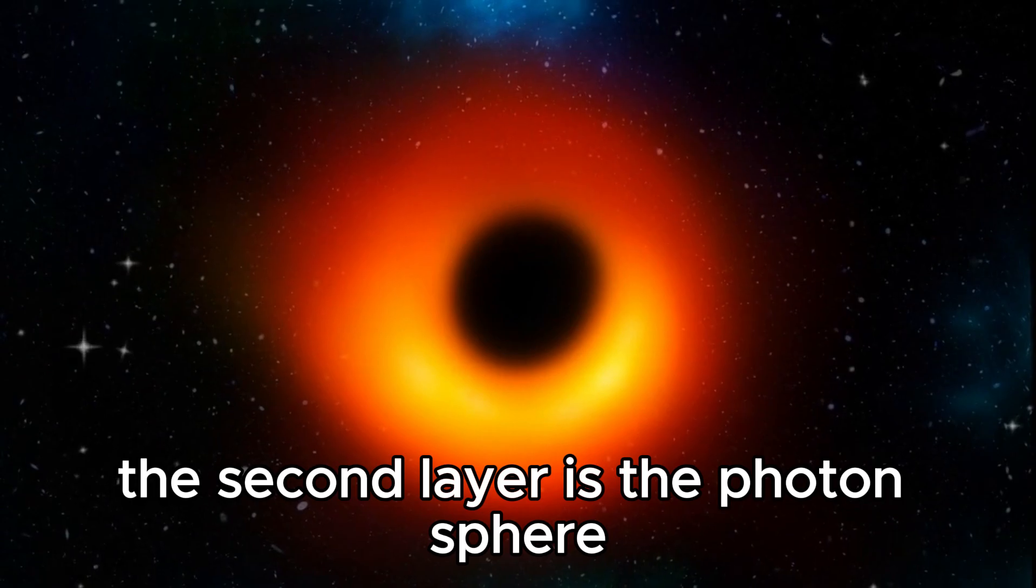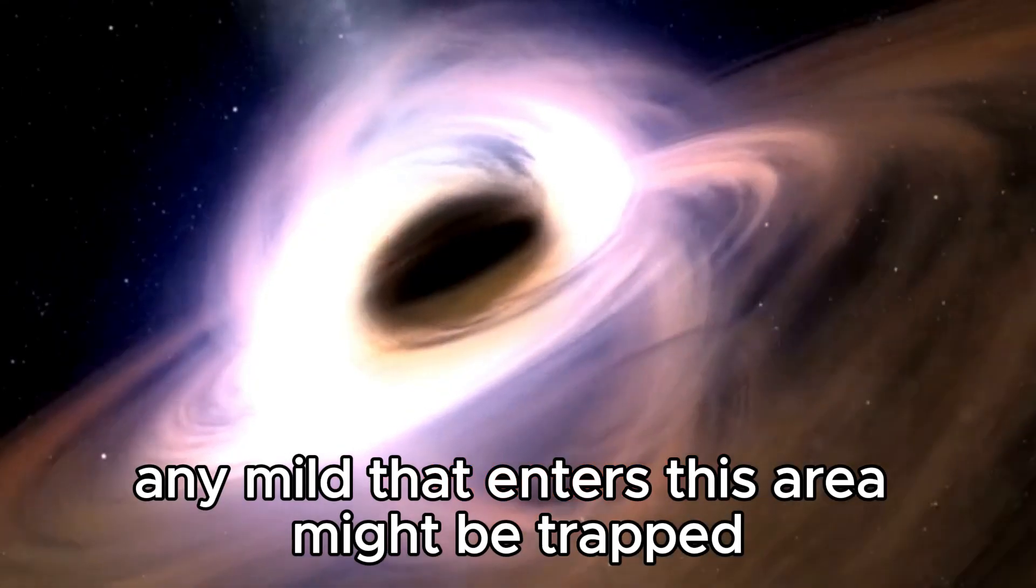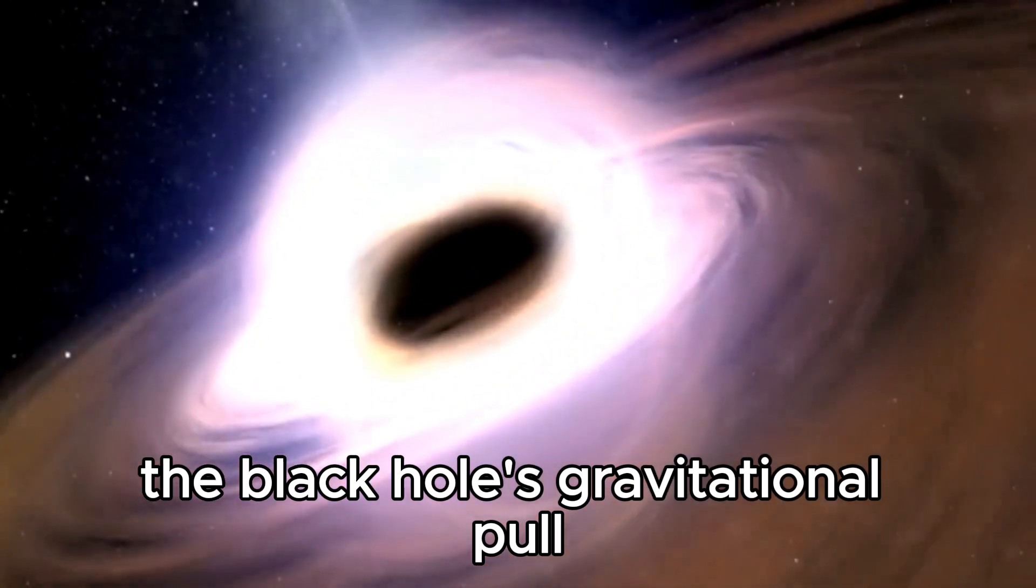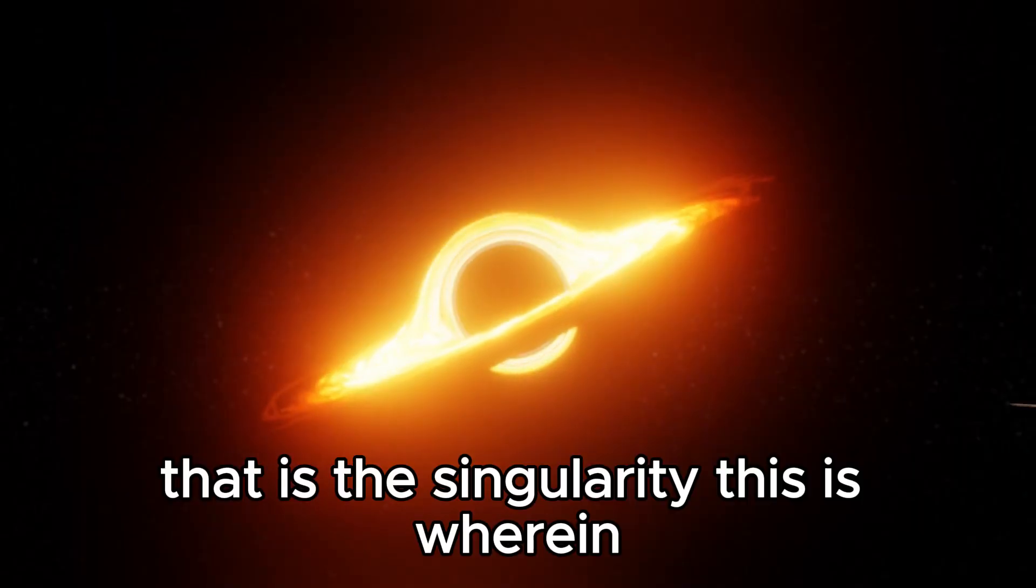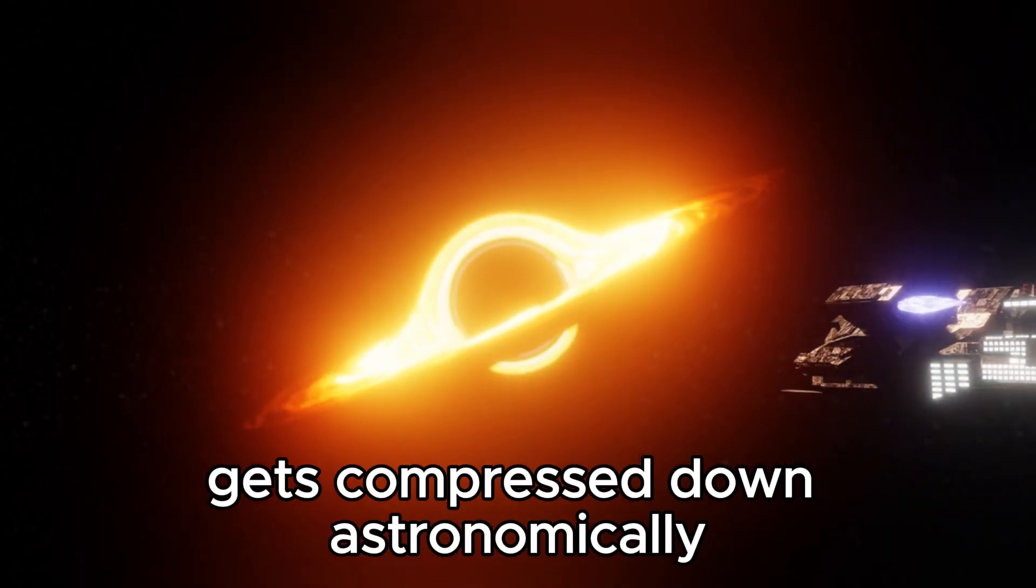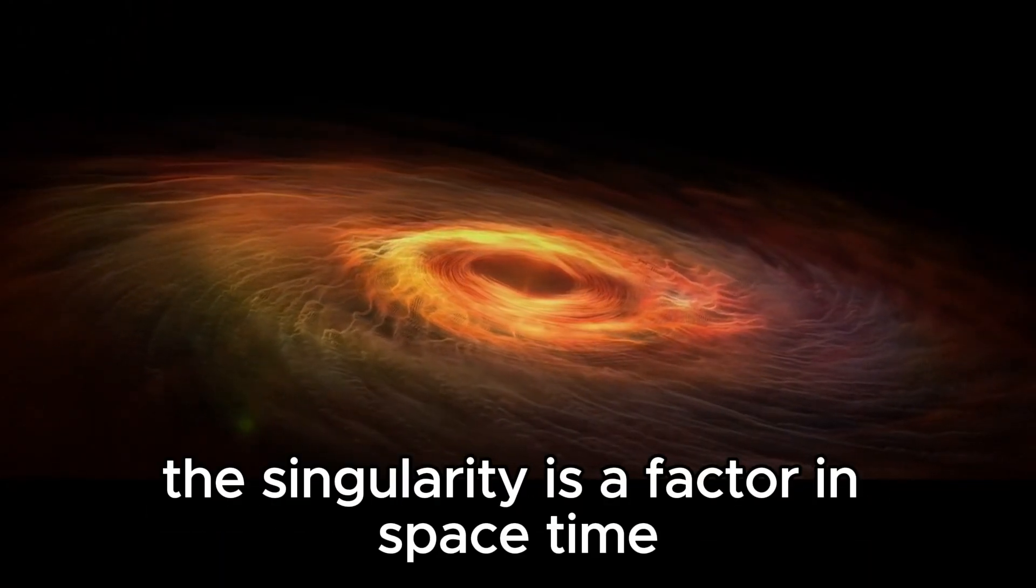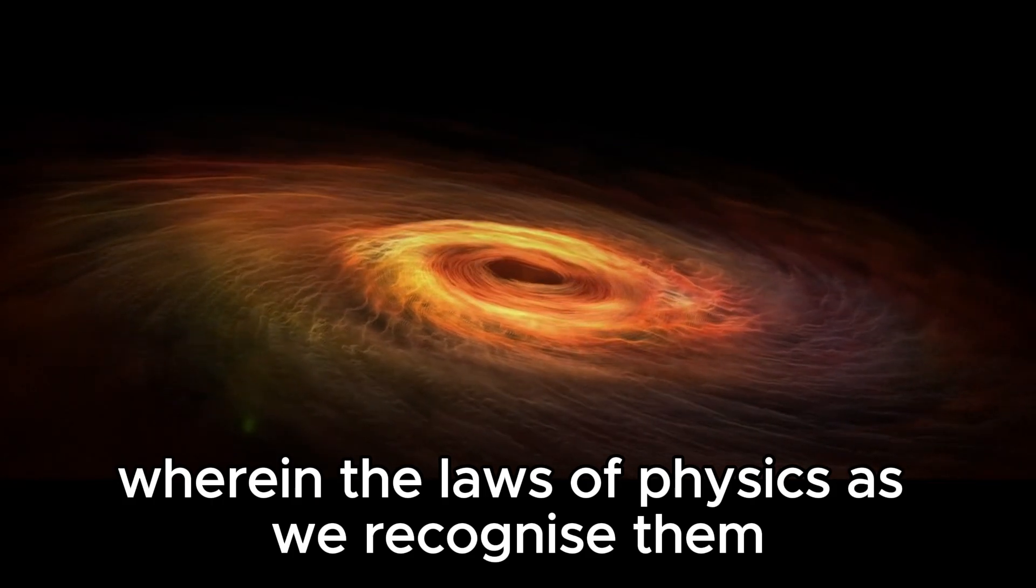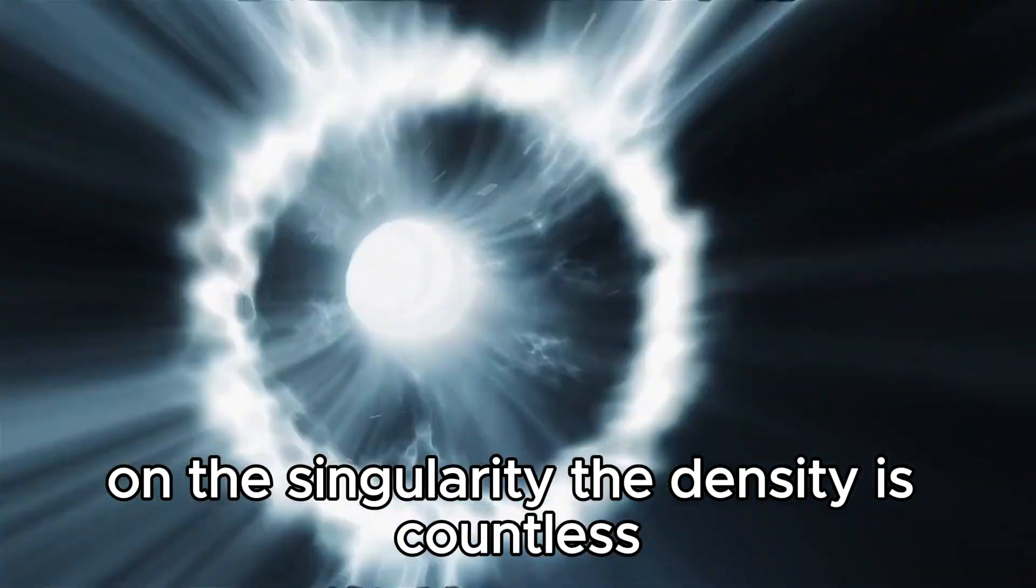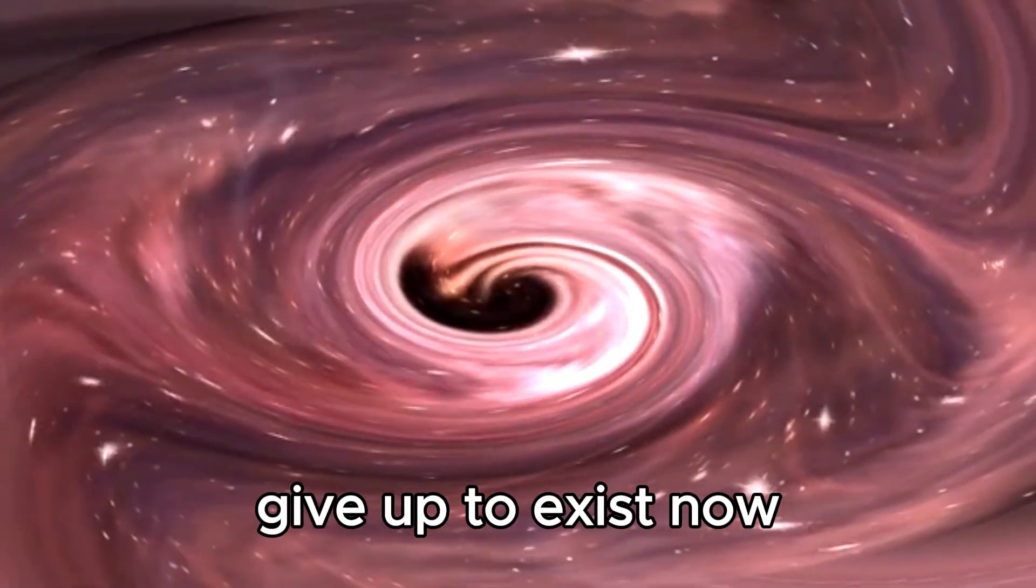The second layer is the photon sphere, which is the region where light orbits the black hole. Any light that enters this area will be trapped and will not be able to escape the black hole's gravitational pull. Finally, we come to the third layer, which is the singularity. This is where everything that enters the black hole gets compressed down astronomically until it becomes a singularity. The singularity is a point in spacetime where the laws of physics, as we know them, break down, and we just cannot predict what happens next. At the singularity, the density is infinite, and the laws of physics, as we know them, cease to exist.